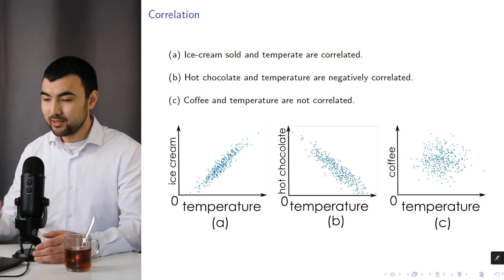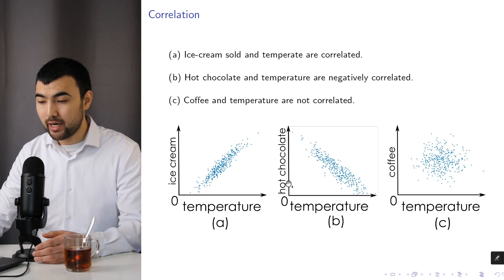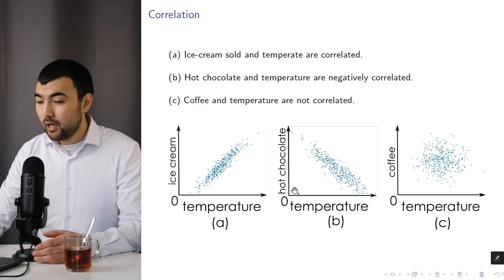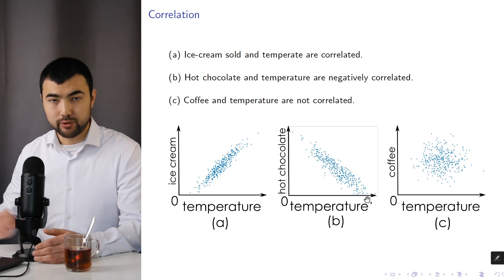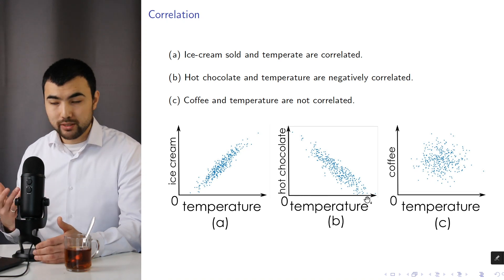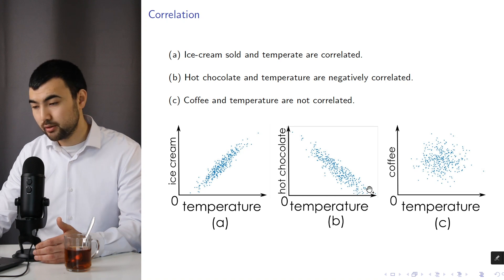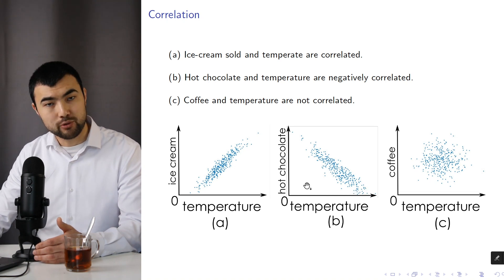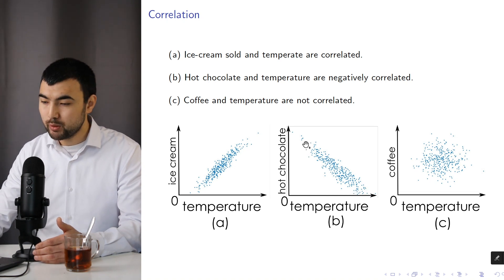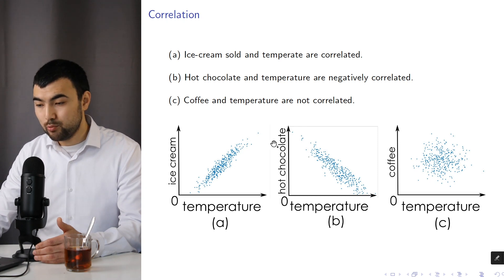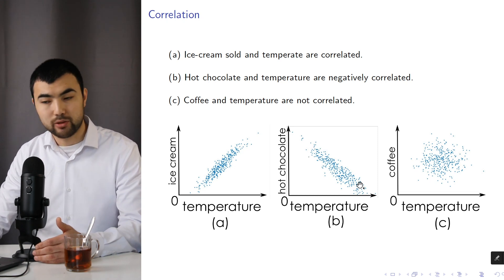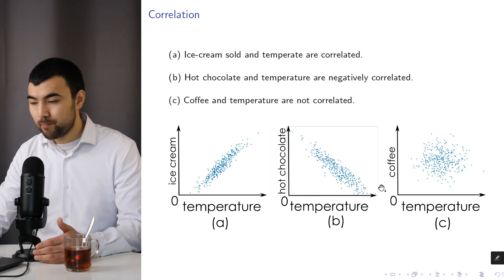Next, let's consider the example where instead of ice cream we have hot chocolate. When the temperature increases, for example during the summer, people tend to buy less hot chocolate. But when the temperature drops during the winter, people buy more hot chocolate. So in that situation, we have negatively correlated random variables.